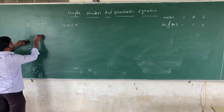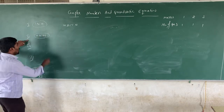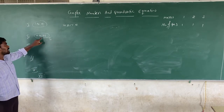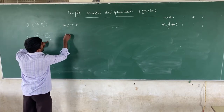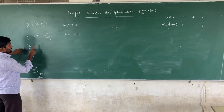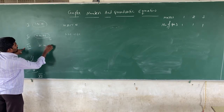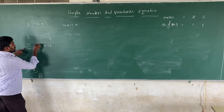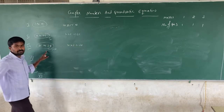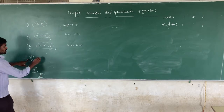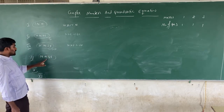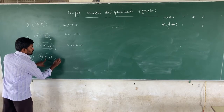Each question in the second section carries marks accordingly. In the fourth section, there are 10 questions — question number 39 to question number 48. Among them, you have to answer only 6 questions. Each question carries 5 marks, so 6 into 5 equals 30 marks.